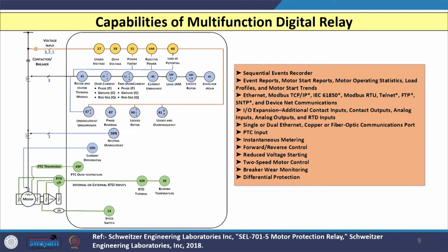Let us see the capabilities of a multifunction digital relay or motor management relay. As shown in the diagram, the motor is protected by different protective elements. The lower green portion is for winding temperature detection and speed detection. If you want to measure the speed or bearing temperature, you can use a thermistor or resistance temperature detector — using internal or external RTD inputs of the relay.